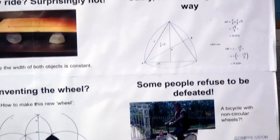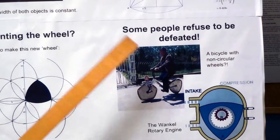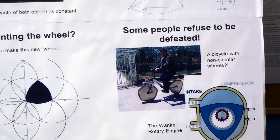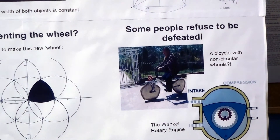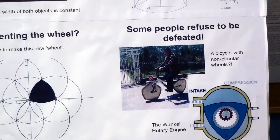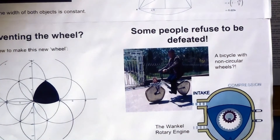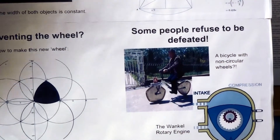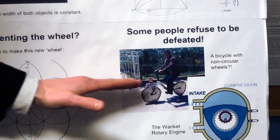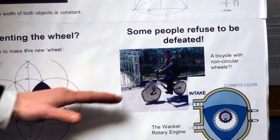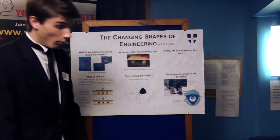However, some people have actually refused to be defeated - such as this man here, who has made a bicycle out of this family of shapes. The axle actually moves up and down, so it is not held by the axle; it is rolling essentially along the top of the frame of the bike, which remains parallel to the surface.